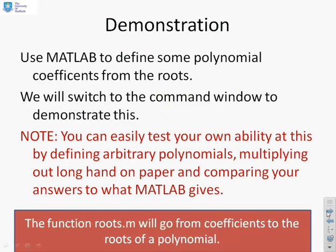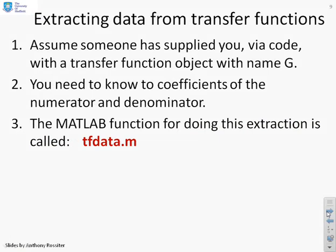Just as a by the by, the function roots.m will go from coefficients to the roots if you need it. But we're not going to talk about that here. Next then, I've got my transfer functions. What if I want to extract the data from it? So assume you've written some code, or someone else has written some code, and they're sending you a transfer function object, and let's say its name was g. Now your code needs to know what are the numerator coefficients and what are the denominator coefficients. So you can't just look at it on the screen. You've actually got to extract it automatically using the code. So how do you do this? Well, the MATLAB function for doing this is called tfdata. And hopefully that's obvious. tf for transfer function, data. What data is in this transfer function, i.e. what are the numerator coefficients and the denominator coefficients.